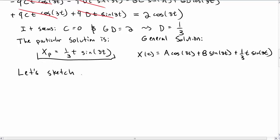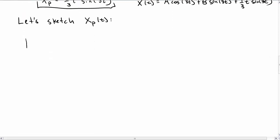Let's get some intuition for what this particular solution looks like by sketching it. So let's sketch x versus t. Again, this x particular is 1 third t sine of 3t, and so the sine of 3t tells me it's going to look like sine of 3t.